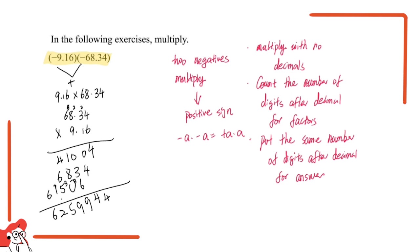The next step is to count the number of digits after the decimal for the factors. In total we should have 1, 2, 3, 4 — so there are four digits after the decimal for the factors. We put the decimal before the 9 in order to have four digits after the decimal for our answer.